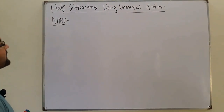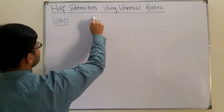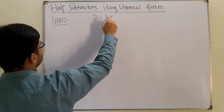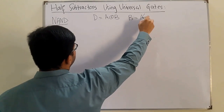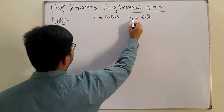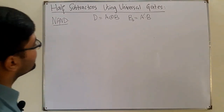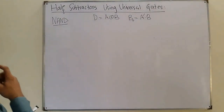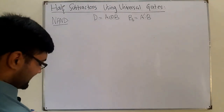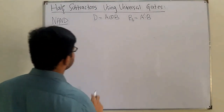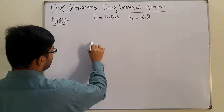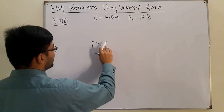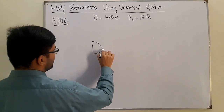So you know what is the difference: in the case of half subtractors, the difference is A exclusive OR with B, and the borrow — I represent borrow as B output — is A complement AND with B. So now we need basically 5 or 6 gates to represent them. Let's draw it and see how this is working, similar to the half adder circuit.